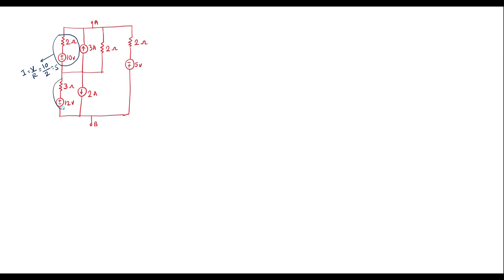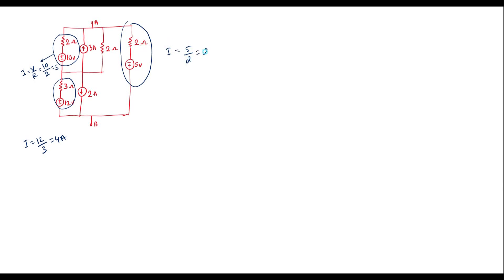Similarly, here also we can see that a voltage source is in series with a resistor. I can write I is equal to 12 by 3, which is equal to 4 amp, so this 3 ohm is connected in parallel with 4 amp. Similarly, here also there is a voltage source in series with 2 ohm resistor. I can write I is equal to 5 by 2, which is equal to 2.5 amp.